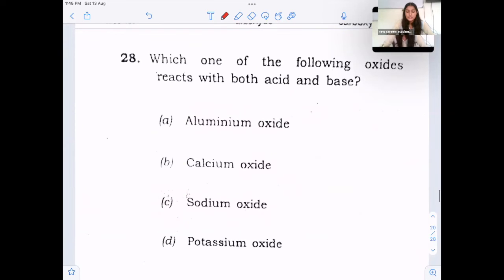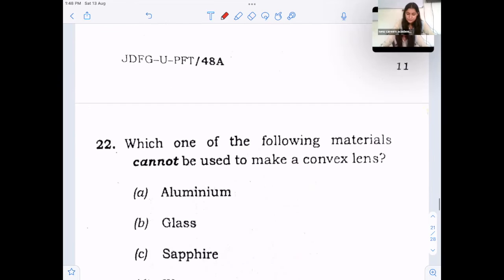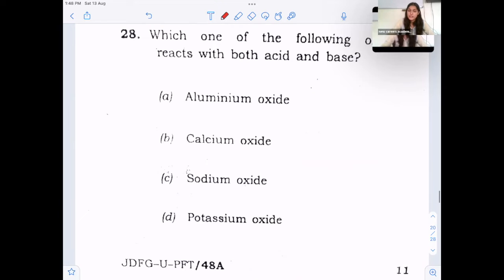Next, which one of the following oxide react with both acid and bases? So there are two amphoteric oxides which you need to remember and those two are aluminium oxide and zinc oxide. The answer is option E, aluminium oxide.